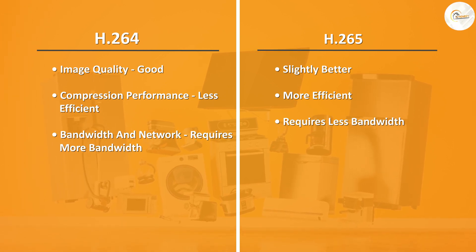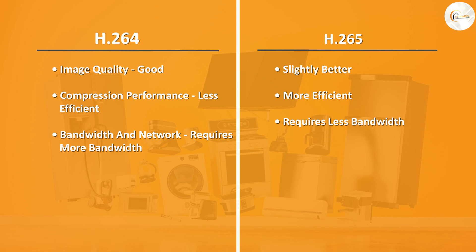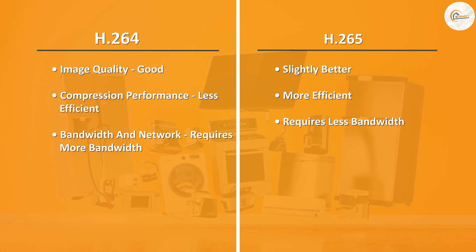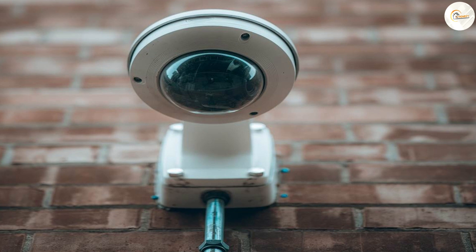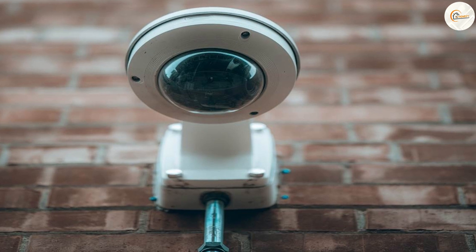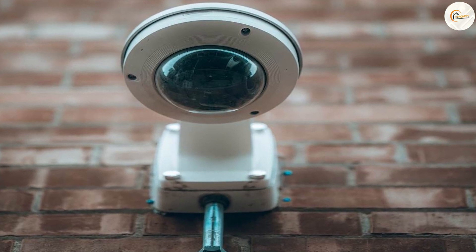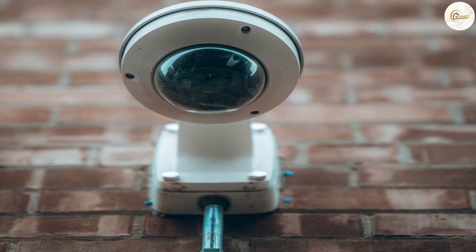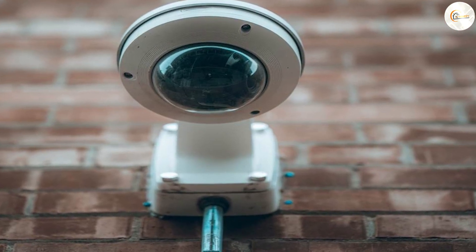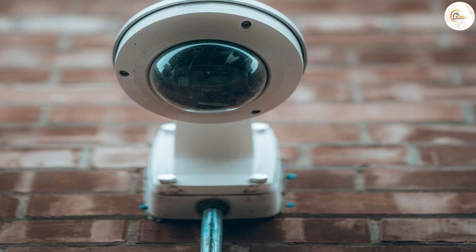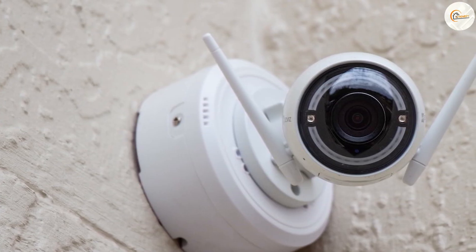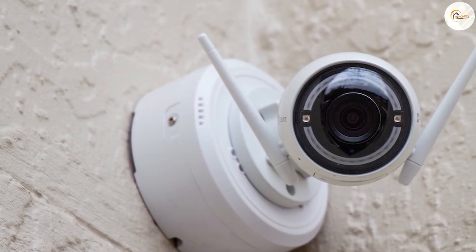Both H.264 and H.265 are capable video compression standards for security cameras. H.265 offers more efficient compression, better network performance, and slightly better image quality, but it may not be compatible with all devices and software.